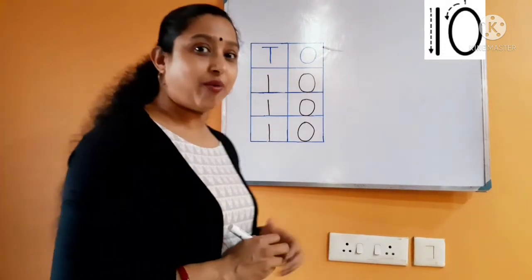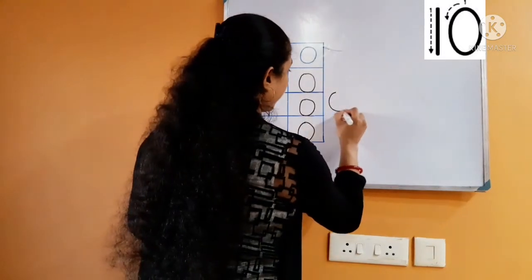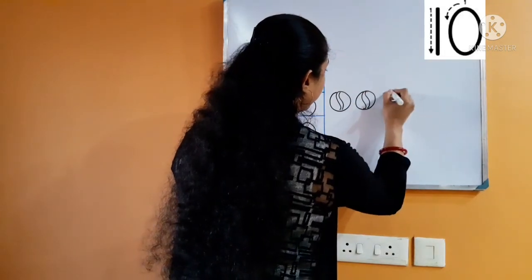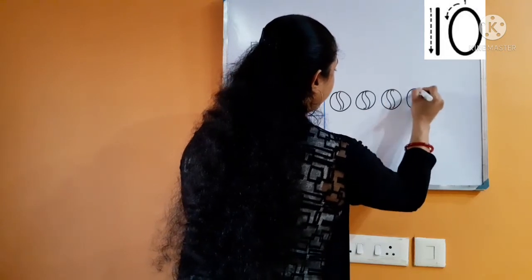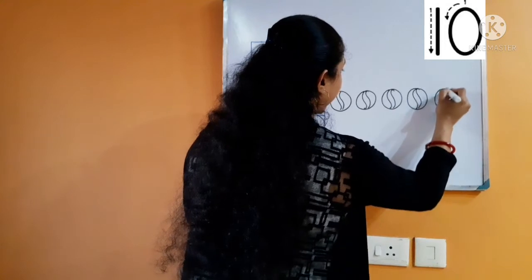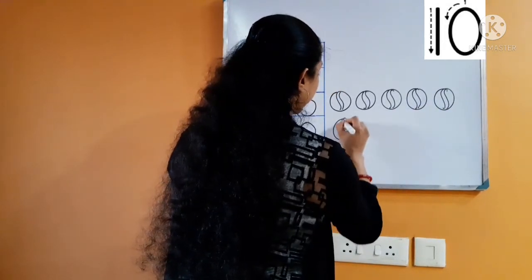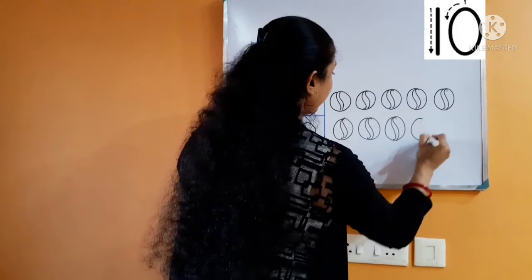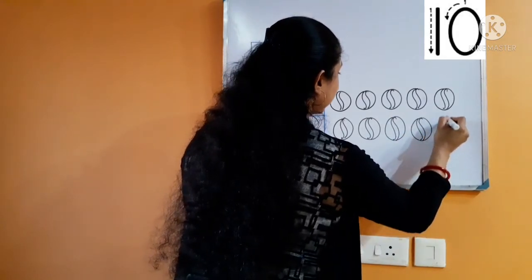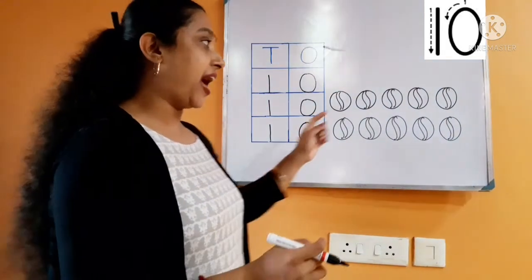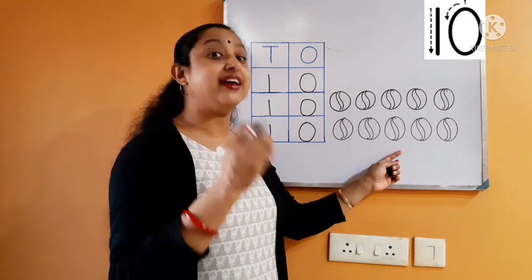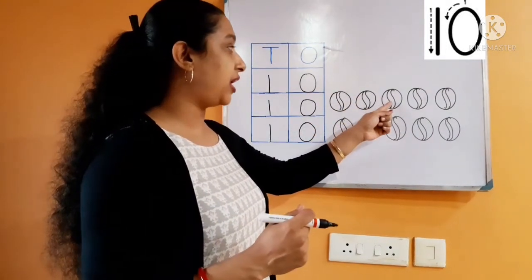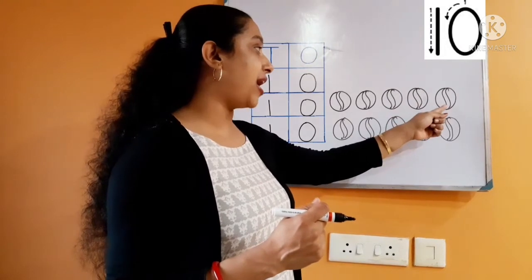Now we are going to draw ten balls. Everyone look at the board: one, two, three, four, five, six, seven, eight, nine, ten. So this is number ten. How many balls are there? There are ten balls. Let's count one more time: one, two, three, four, five, six, seven, eight, nine, ten.